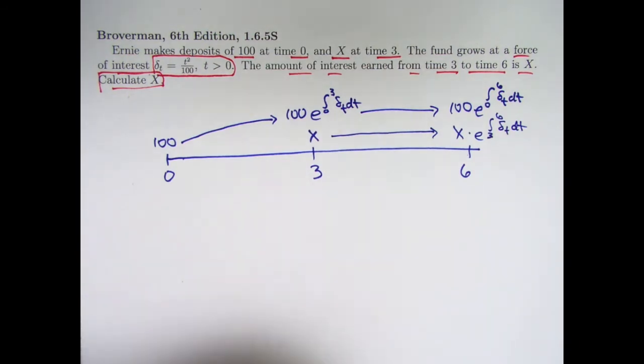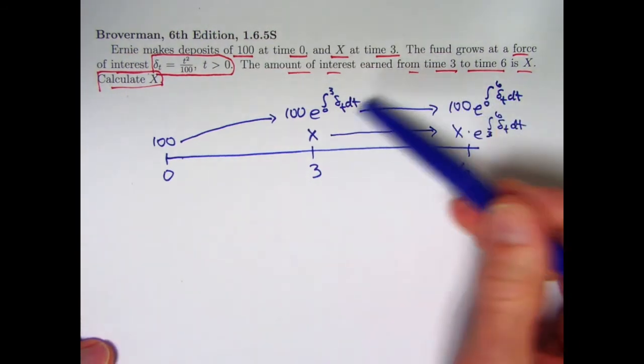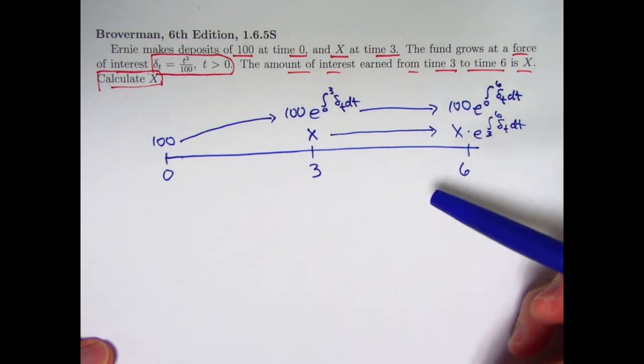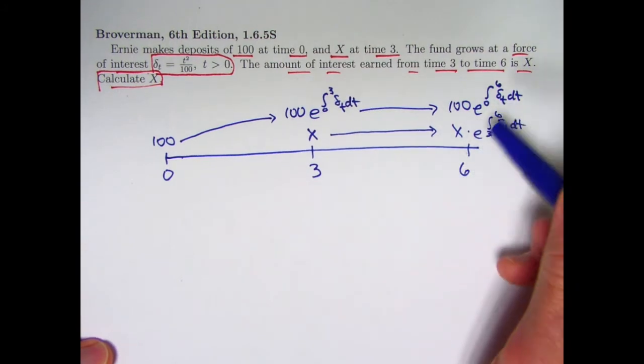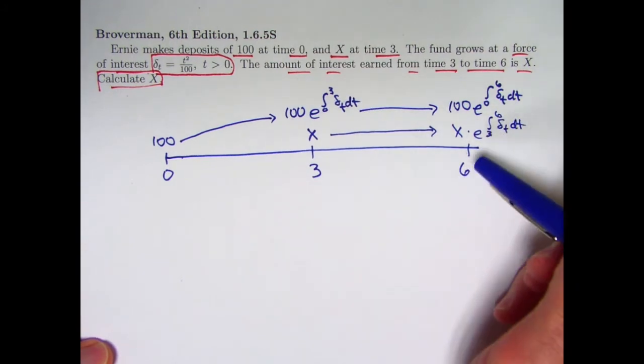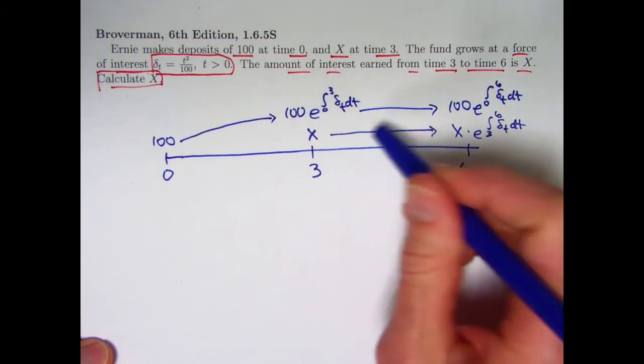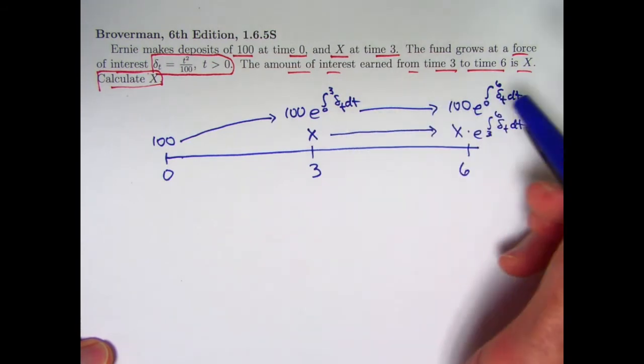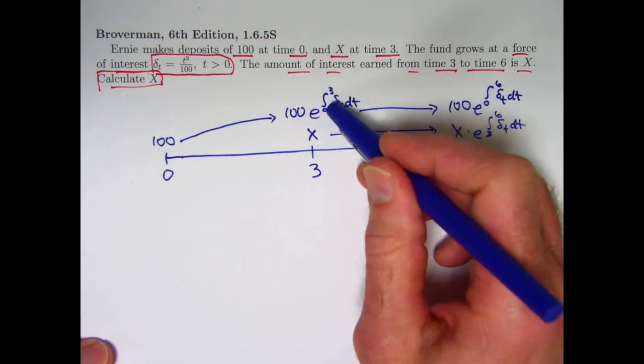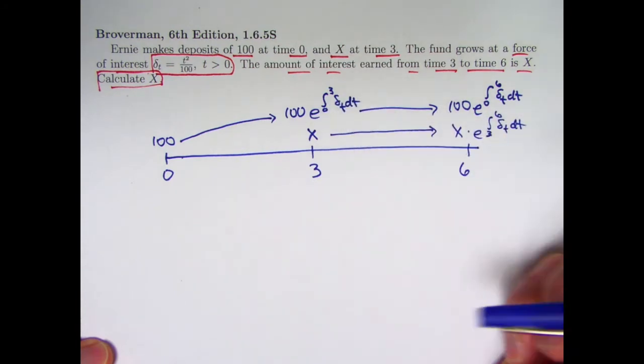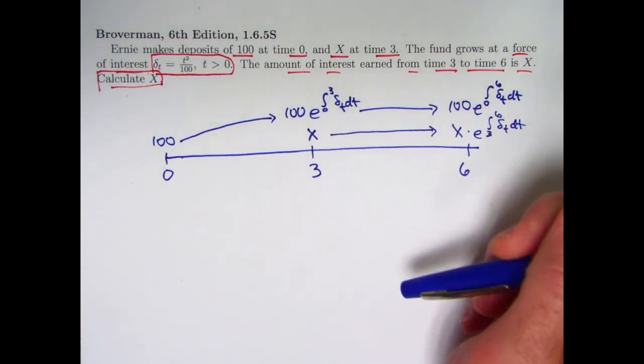So once I find these quantities, these integrals, and multiply these by 100, I can find the total interest earned from time 3 to time 6 by taking this quantity minus this one and adding this quantity minus this one. Set that equal to x, then solve the resulting equation for x.